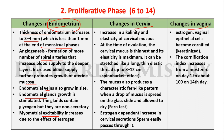Endometrial gland growth is stimulated; the glands contain glycogen but are non-secretory during the proliferative phase. Myometrial excitability increases due to the effect of estrogen. The proliferative phase is specifically dependent upon estrogen.